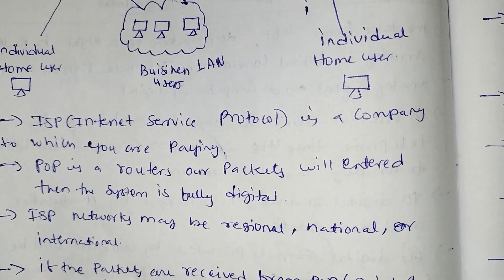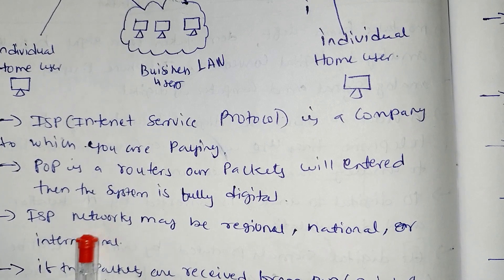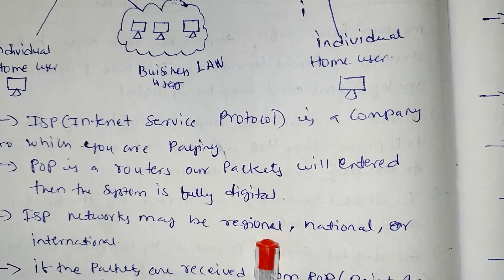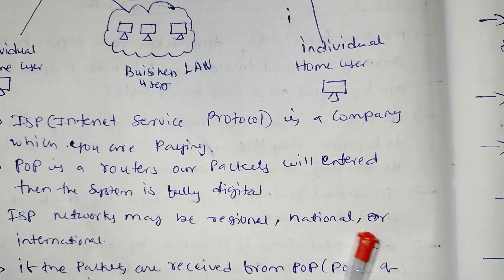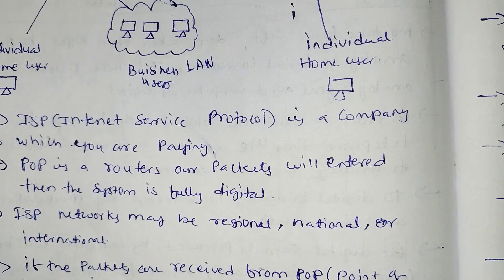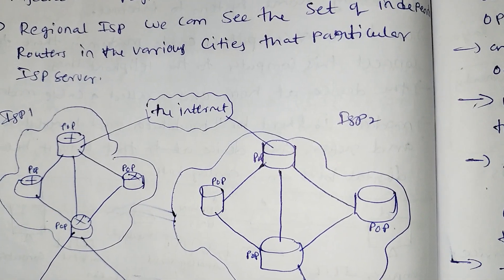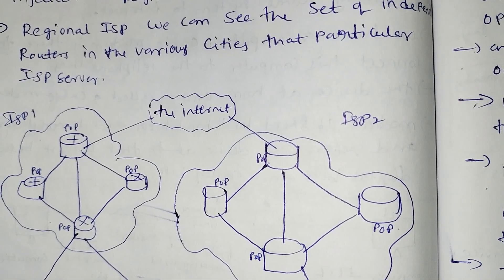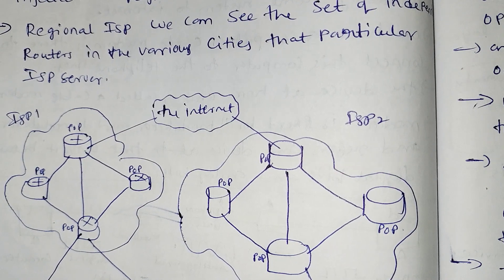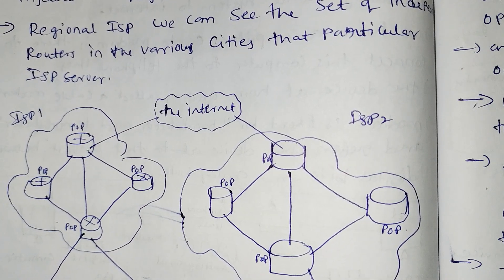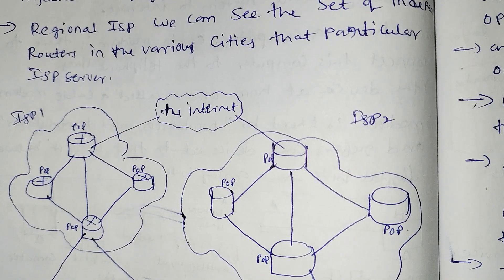ISP — Internet Service Provider — can be regional, national, or international. If you want to be an internet service provider, you can operate as a regional provider, a national provider, or an international provider.